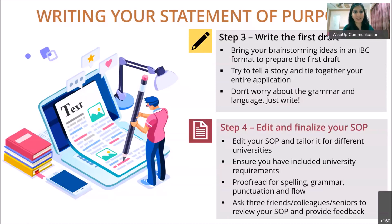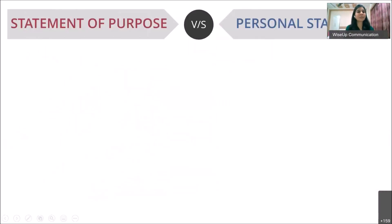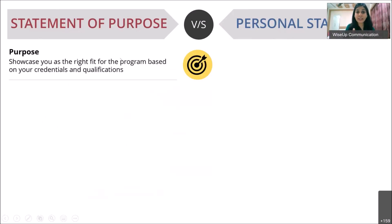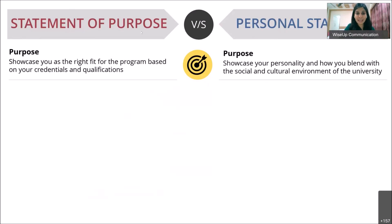Now, what is the difference between a Statement of Purpose and a Personal Statement? Most universities require an SOP; some also require a personal statement. The first difference is purpose. For an SOP, as the name suggests, the purpose is to show your intent and motivation towards your graduate study — to showcase yourself as the right fit for the program based on your credentials and qualifications.